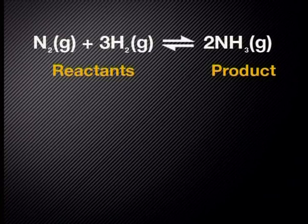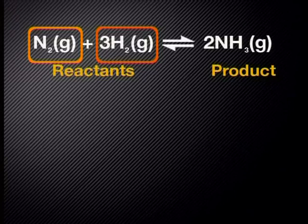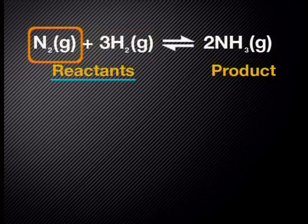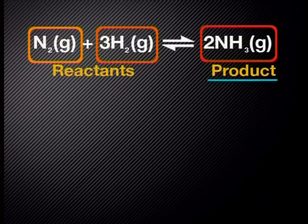As our first example, let's examine the reaction of hydrogen and nitrogen to form ammonia in a closed container when chemical equilibrium is reached. Here is the balanced chemical equation. It tells us that one mole of nitrogen reacts with three moles of hydrogen to produce two moles of ammonia. Nitrogen and hydrogen are the reactants and ammonia is the product.